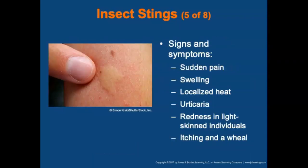Signs and symptoms of an insect sting include sudden pain, swelling, localized heat, widespread urticaria, redness in light-skinned individuals, itching, and a possible wheal. The wheal — W-H-E-A-L — is a raised, swollen, well-defined area on the skin.